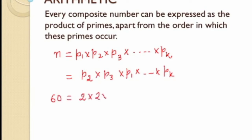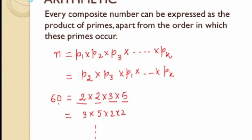For example, 60 can be written as 2 × 2 × 3 × 5, or as 3 × 5 × 2 × 2 — any ordering works. The primes that occur in the factorization are unique; only their ordering may vary. We prefer to write primes in ascending order, so 60 = 2² × 3 × 5. Without realizing it, you were already applying the Fundamental Theorem of Arithmetic whenever you did prime factorization by tree or step methods.